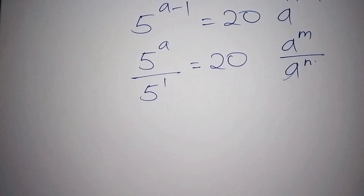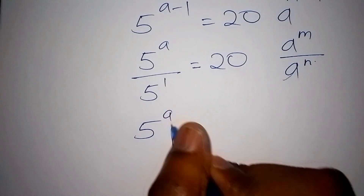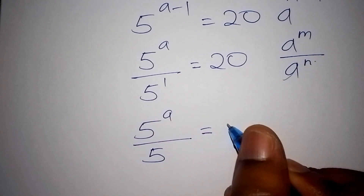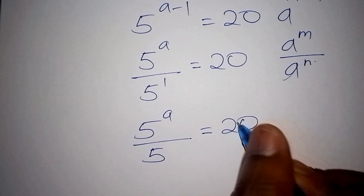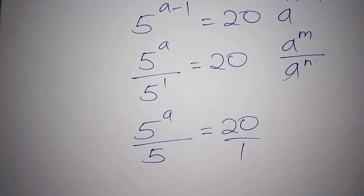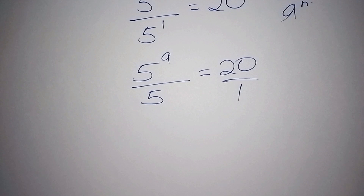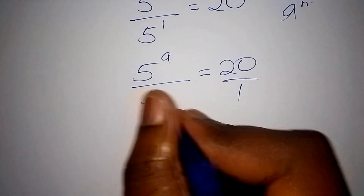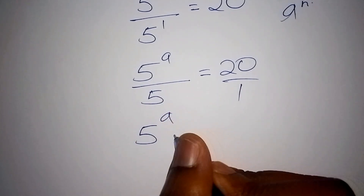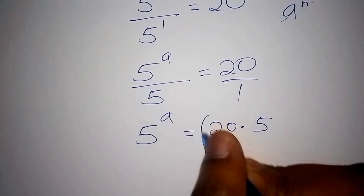We can rewrite this as 5 to the power of a all over 5 equals 20. We can put the 5 over 1, and from there we do cross multiplication. So now we have 5 to the power of a equals 20 multiplied by 5.